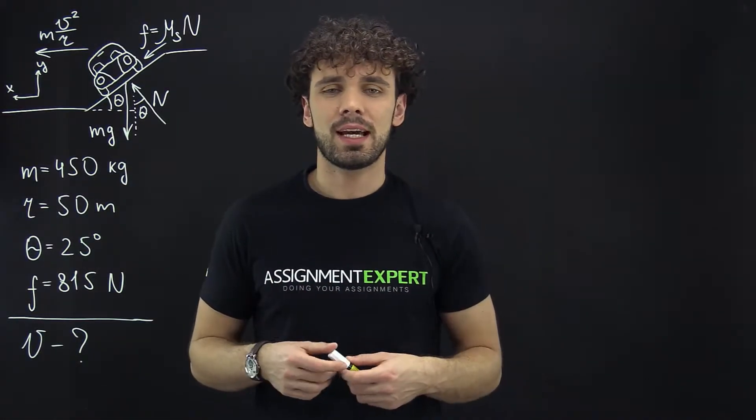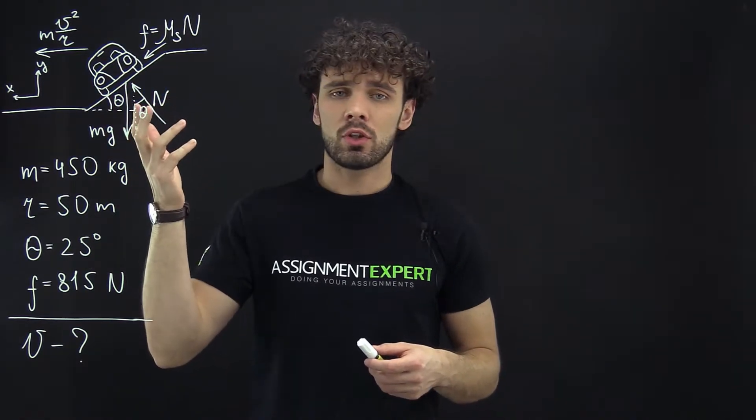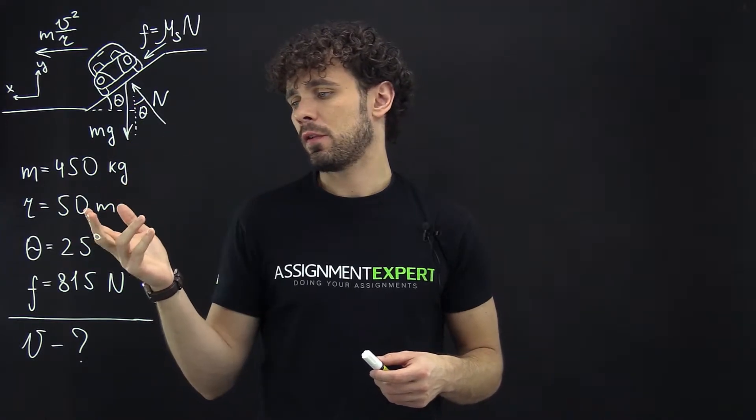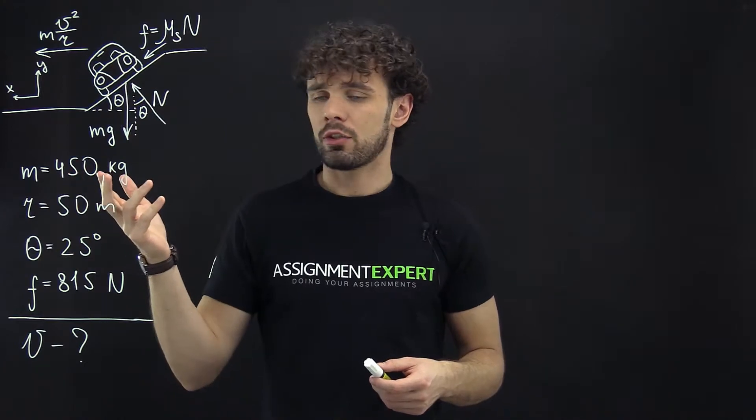Hi guys, this is Assignment Expert. Today, as you can see on the graph, we have a car which rounds a circle of radius 50 meters with constant speed. The car weighs 450 kilograms.